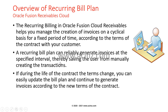A recurring bill plan can reliably generate invoices at the specified interval, saving the user from manually creating the transaction. It not only saves the user from manually creating the transaction, but also from having to remember the timing — for example, remembering that every week a bill must be sent. Instead, you can instruct the system to create an invoice on your behalf and send it to the customer every week, fortnight, month, or quarter as the contract states.